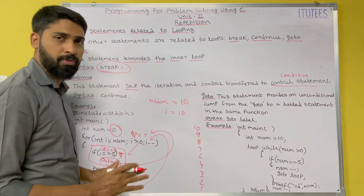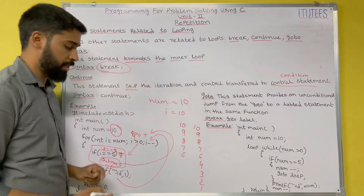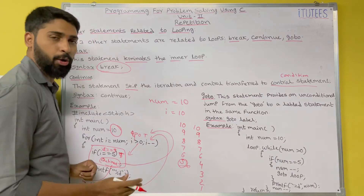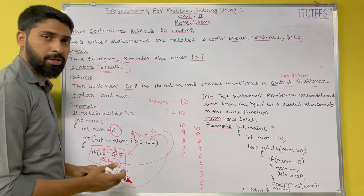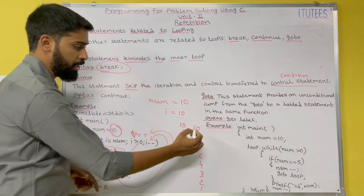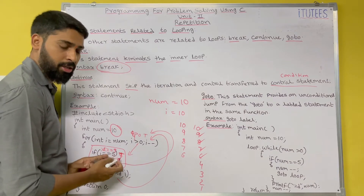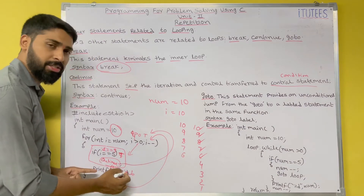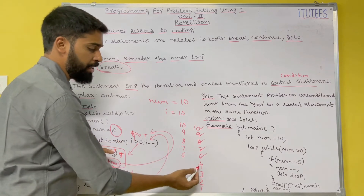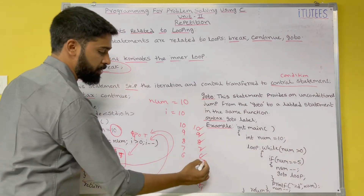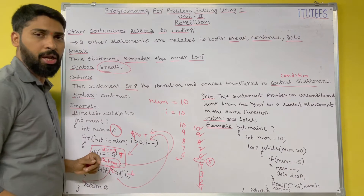I hope you all understand the difference between break and continue. Break output: 10, 9, 8, 7, 6 — when i becomes 5, the loop is terminated and we don't enter the loop again. With continue, the output skips 5: 10, 9, 8, 7, 6, 4, 3, 2, 1. Continue skips the iteration and the below instructions do not execute; control goes back to the condition. These are the differences between break and continue.